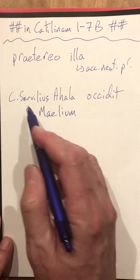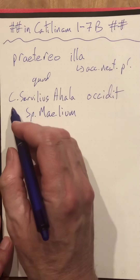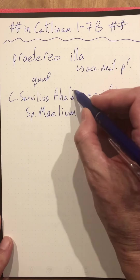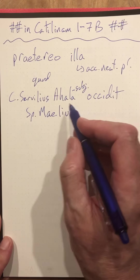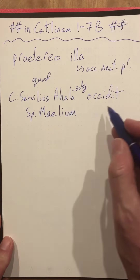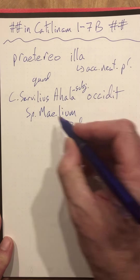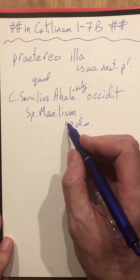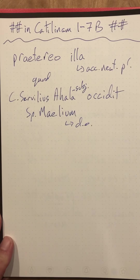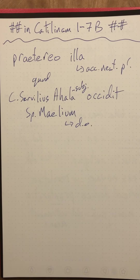And then this next bit — the fact that Servilius Ahala, again subject, because that name is in the nominative case — killed Spurius Maelius, direct object, because it's in the accusative case. So really a straightforward sentence if you can get through the confusion of little qualifiers and stuff. That's the hard part.